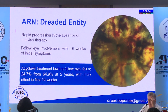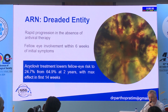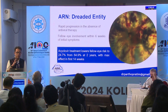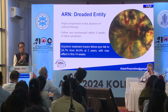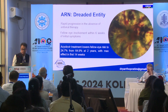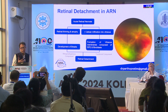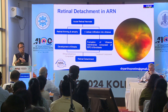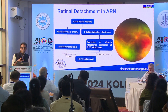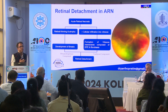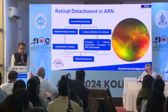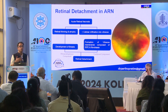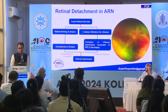This is a dreaded condition — it rapidly involves the entire retina peripherally, and if you are not treating the patient, fellow eye involvement is very common within six weeks of initial symptoms. Acyclovir treatment actually reduces fellow eye involvement from 64% to 24%. As retinal necrosis continues, progressive atrophy leads to breaks, and cellular infiltration into the vitreous causes vitreous membranes, so these patients develop retinal detachment very frequently — with both tractional and rhegmatogenous components.